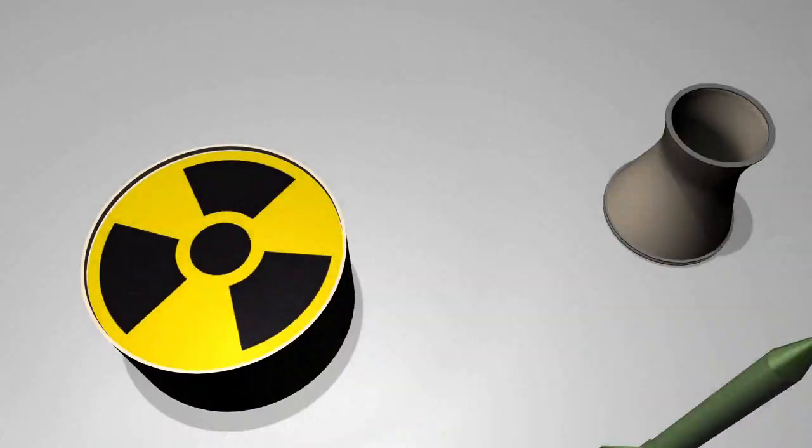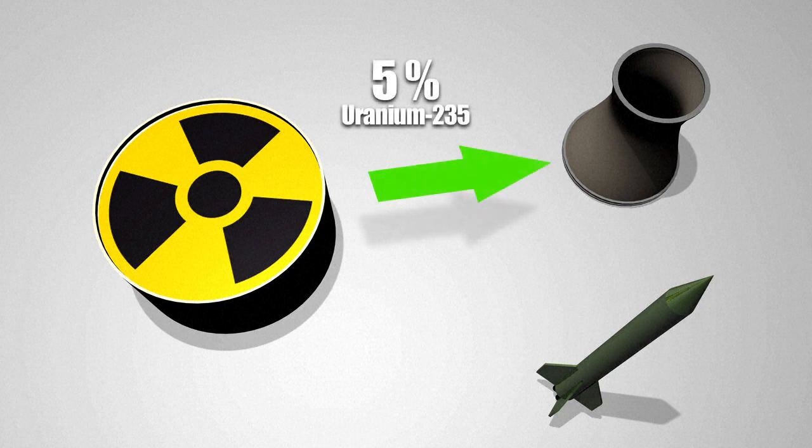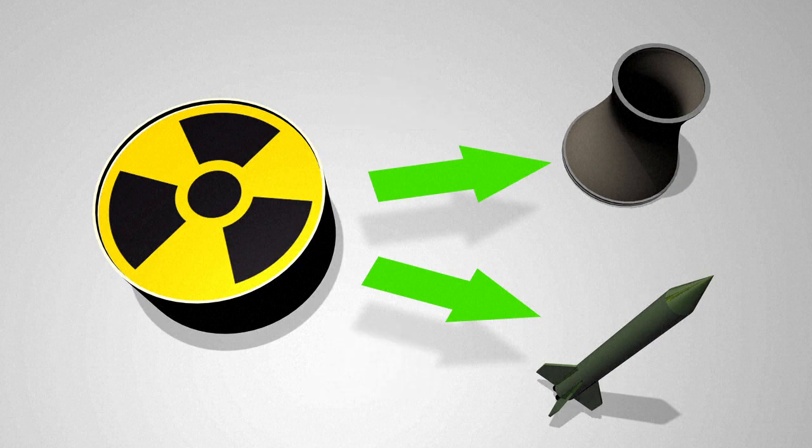To generate power, Uranium is enriched only to 5%. To make a nuclear bomb, it must be enriched to at least 90%. Plutonium-239 is a second option.